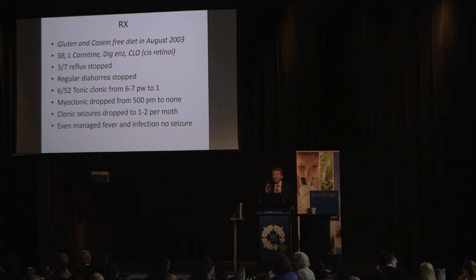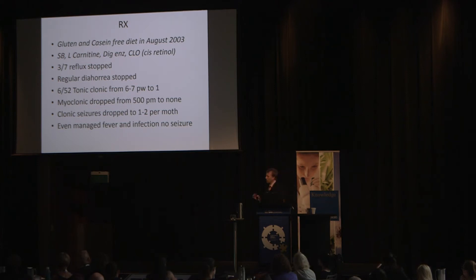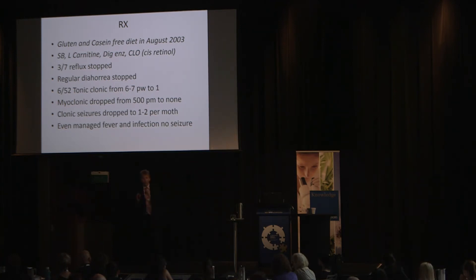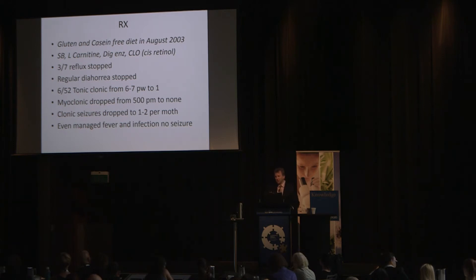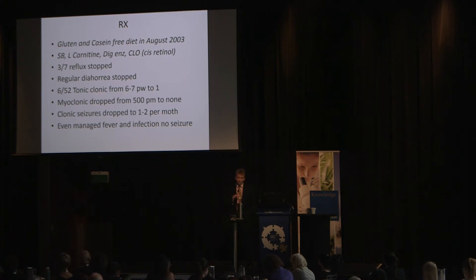This is August 2003. We're going to remove gluten and we're going to remove casein. And I recommended: Saccharomyces boulardii, L-carnitine, digestive enzymes, and cod liver oil. Why cod liver oil? Vitamin A and D, and it's liquid. Mary Megson demonstrated in a study published 18 years ago that in children with autism, lateral viewing of the eye could be reversed in most cases within two weeks by giving cis-retinol, because G-alpha receptor proteins in the retro-orbital space are desperate for vitamin A.